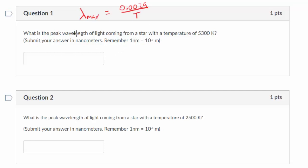Okay, so let's take a look. What is the peak wavelength of light coming from a star with a temperature of 5300 Kelvin? Submit your answer in nanometers. So let's plug this in. We know the temperature is 5300 Kelvin, and that's the only variable we need. So we can find the peak wavelength, lambda max equals 0.0029 divided by 5300.